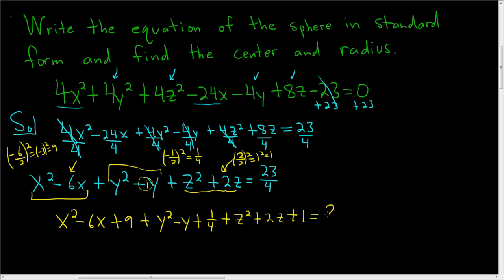On the right-hand side, we have 23 over 4. And we added some stuff to the left-hand side. We added a 9, so we have to put plus 9. And we added a 1 fourth, so plus 1 fourth. And we added a 1, so plus 1.